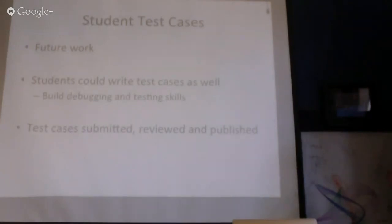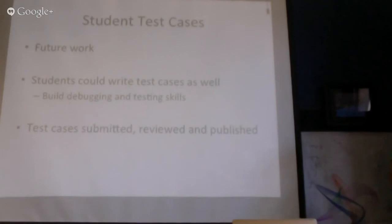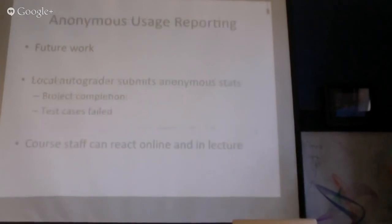You could also imagine rewarding students who produce clever test cases — ones where things that pass many other submissions somehow fail theirs, not because their test was wrong but because they found a tricky edge case. Another idea discussed was anonymous usage reports: every time a student runs the autograder locally, it sends anonymous data about how that went, giving a feel for how far along they are and what wrong answers they produced.